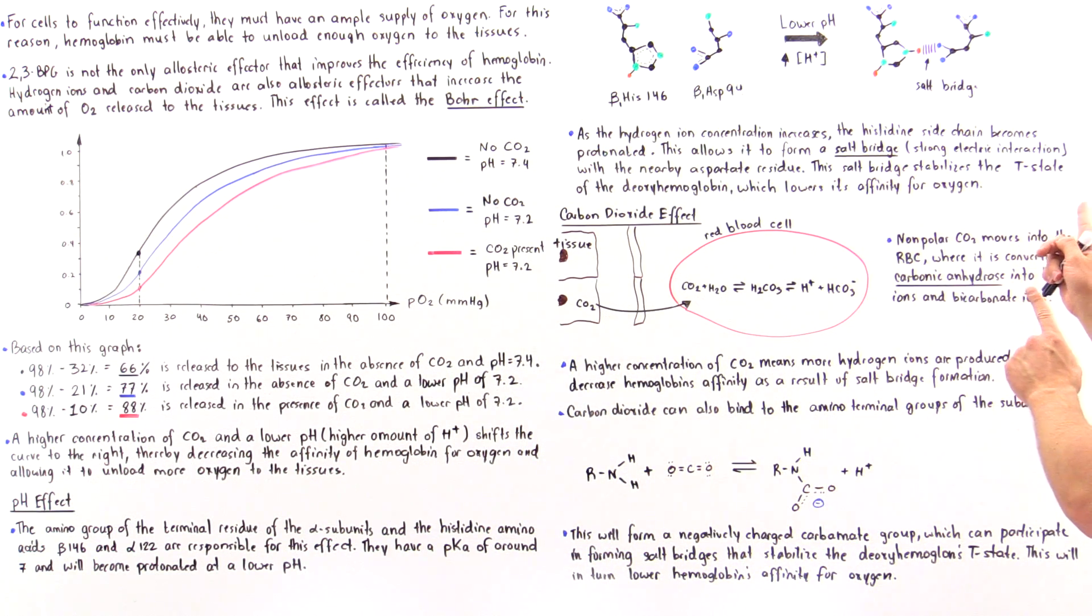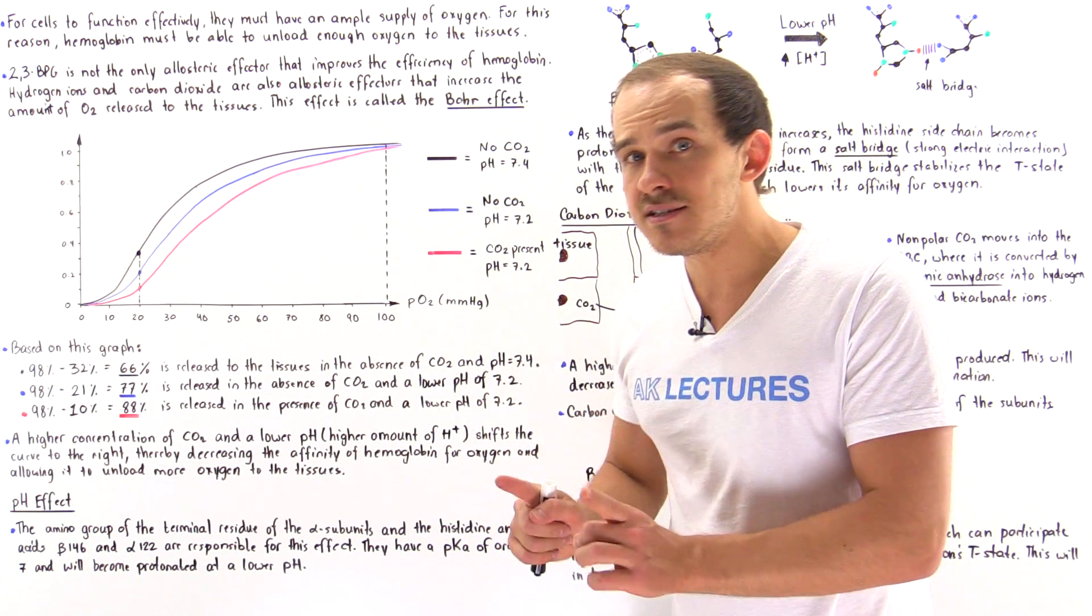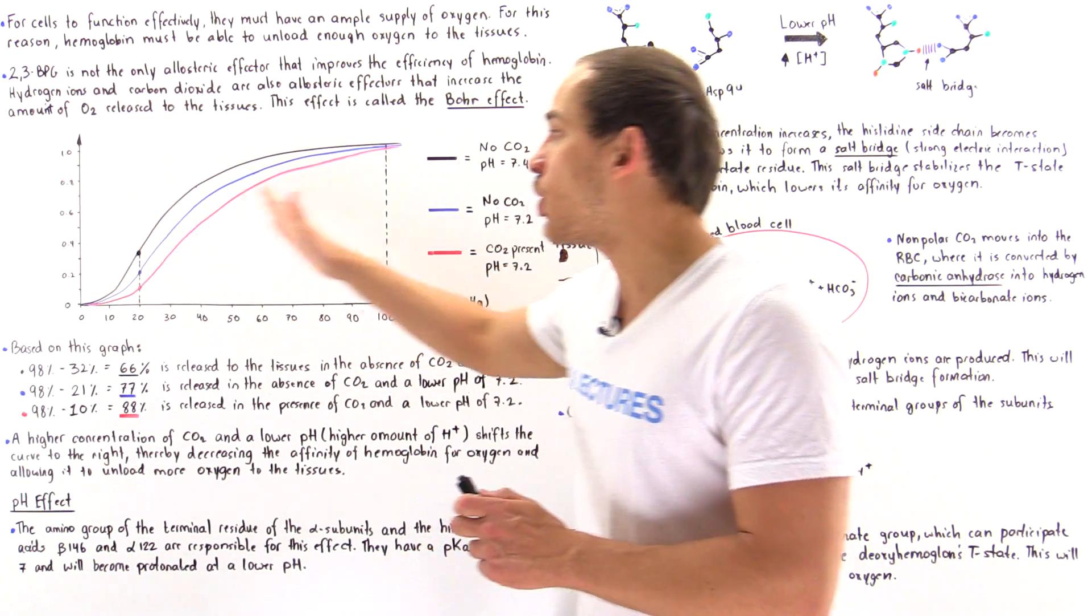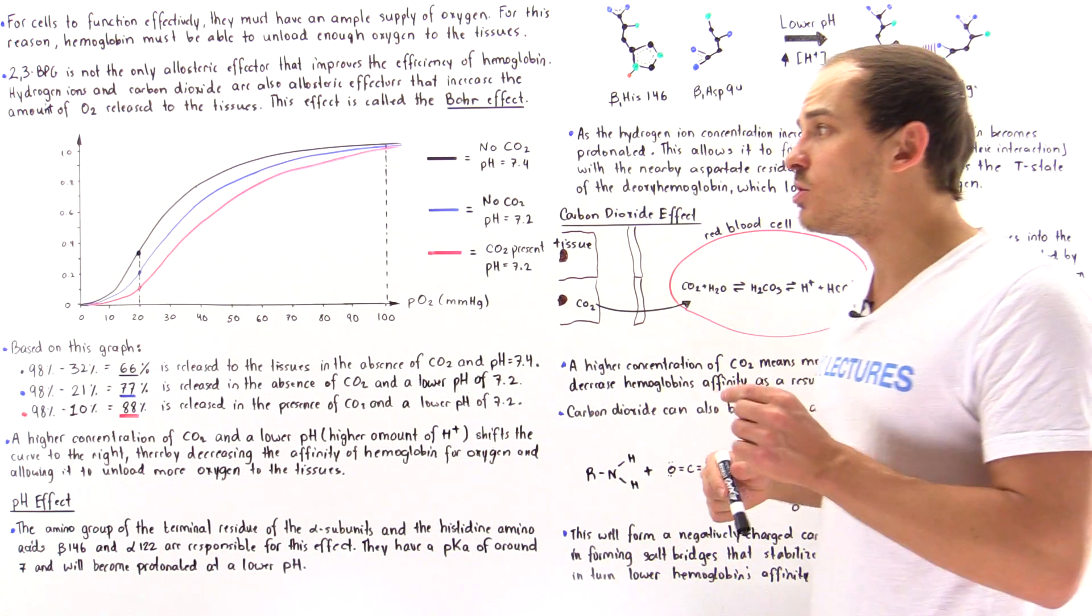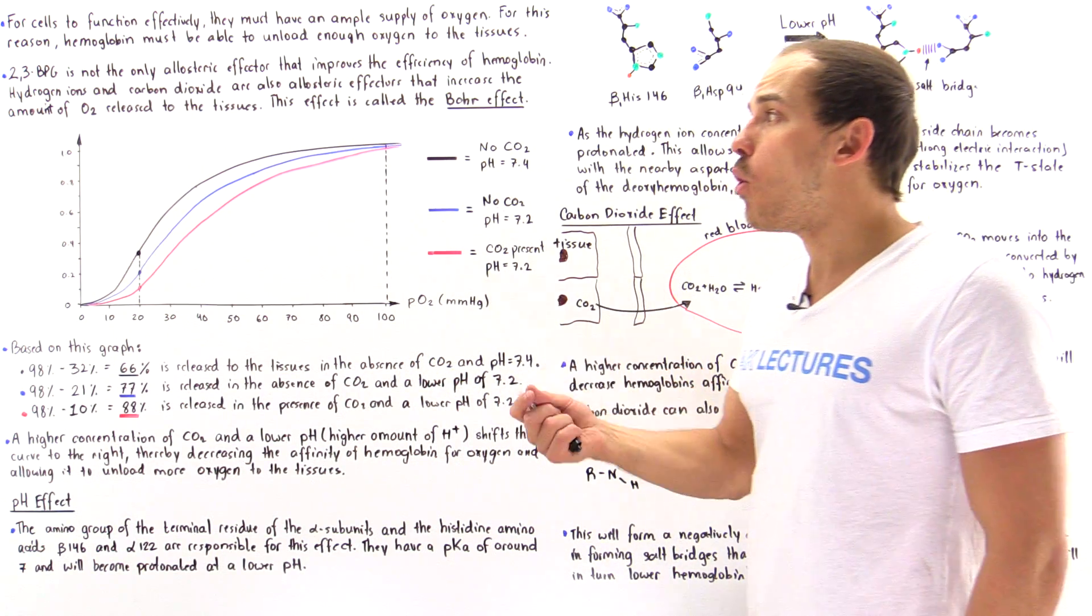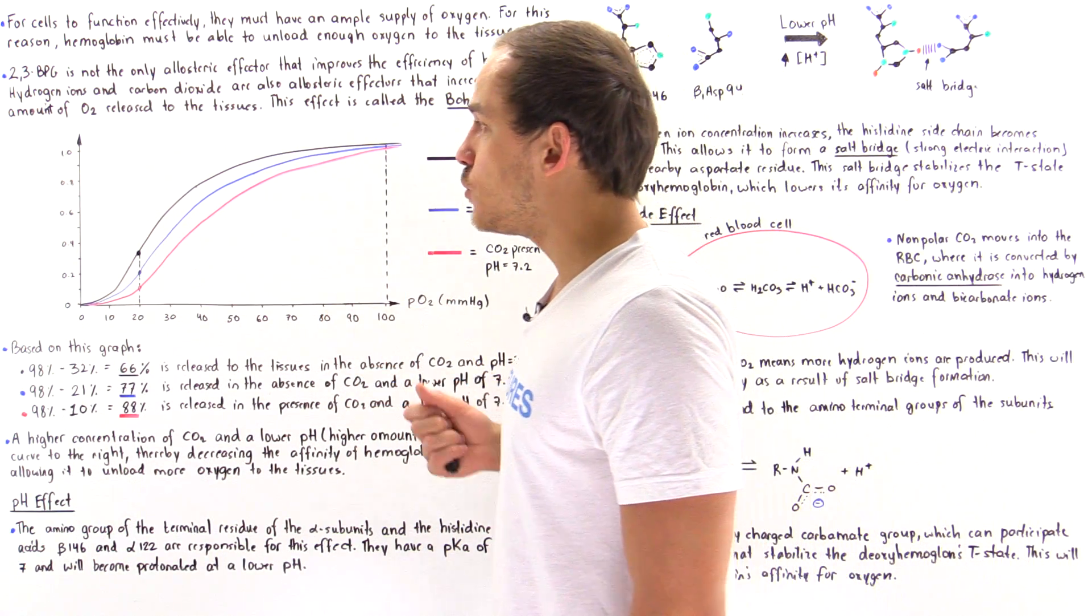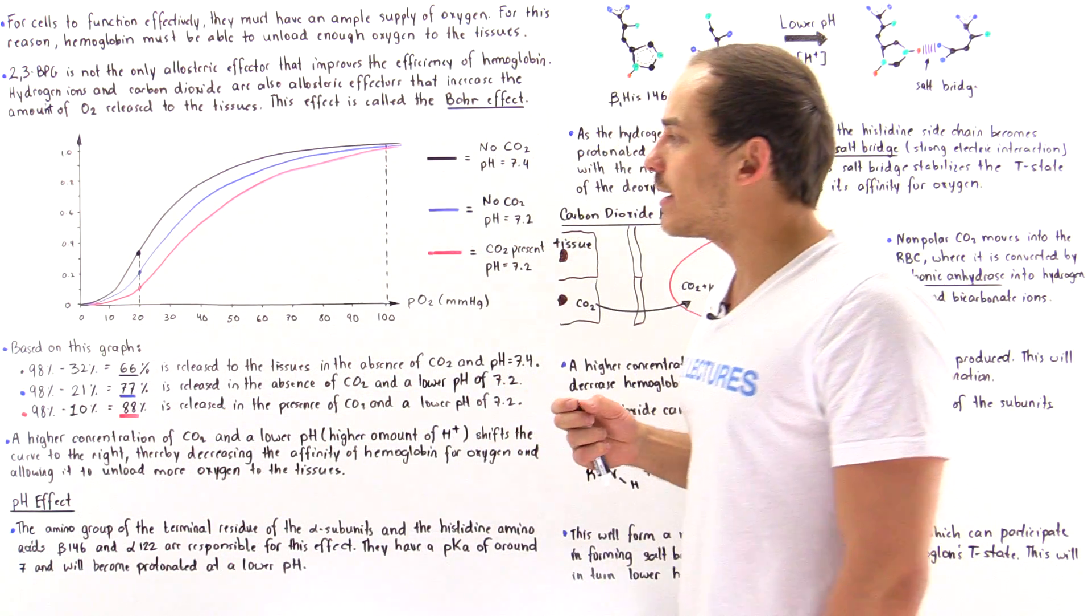And by the same token, the stabilization of the deoxyhemoglobin's T-state also shifts the curve to the right side, thereby decreasing the affinity of hemoglobin for oxygen and allowing to actually unload more O2 molecules to the exercising tissue of our body.